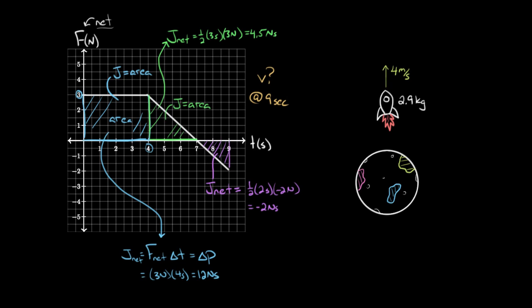And now we can figure out the velocity of this spaceship at nine seconds. So assuming that this force readout started at this moment, right over here, at t equals zero seconds, was the moment when it was going four meters per second, then we can just say the total net impulse should equal the total change in momentum of this spaceship.